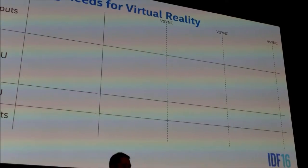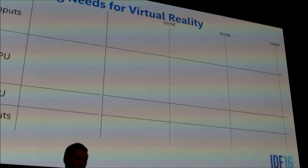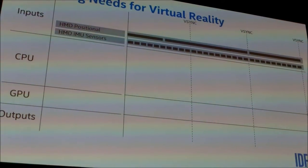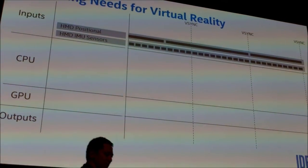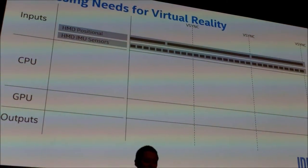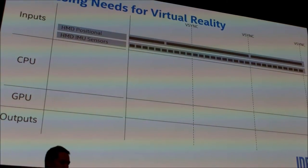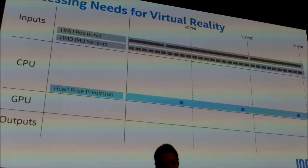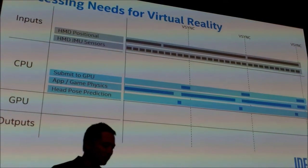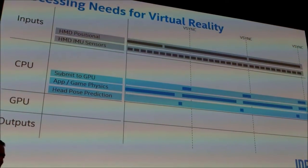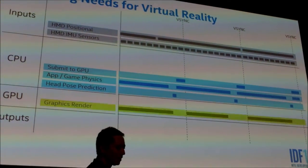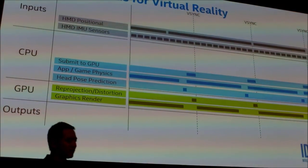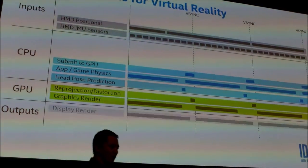Looking at the processing needs for virtual reality: your inputs can be positional information or IMU sensors such as gyros and accelerometers. Positional tracking, depending on your solution, could be an IR camera or a lighthouse solution. This data is brought into your CPU for understanding your head pose and calculating where your head pose will be. Once you understand the head pose, you submit rendering commands to the GPU, do physics simulation on the CPU, and the GPU does the actual graphics rendering. Then in the second part, composition occurs — reprojection, distortion — and that output goes to the display.